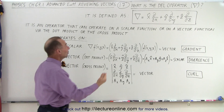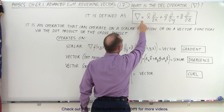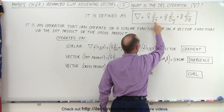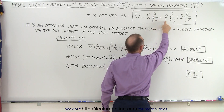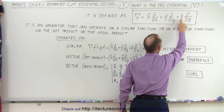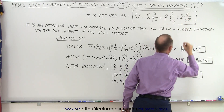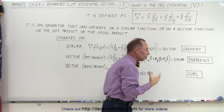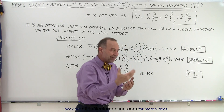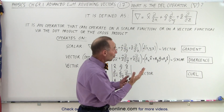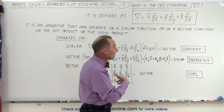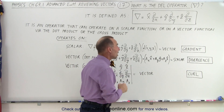We can define the DEL operator as follows: it is equal to the X unit vector times the partial derivative with respect to X, plus the Y unit vector times the partial derivative with respect to Y, plus the Z unit vector times the partial derivative with respect to Z. Essentially, the DEL operator takes the derivative of something and then turns it either into a vector or a scalar quantity, depending on how we use the operator.